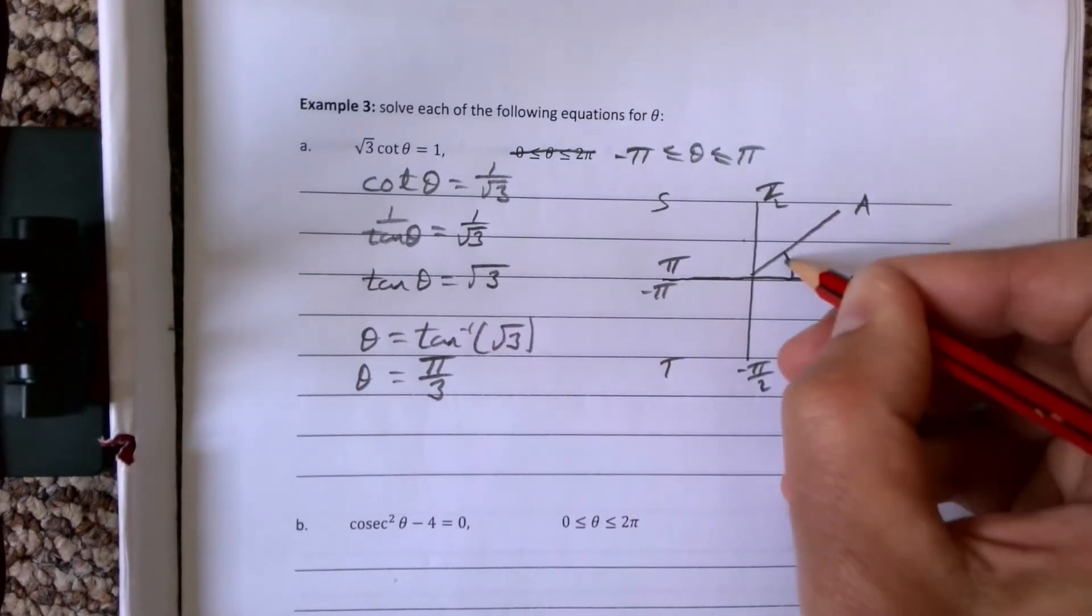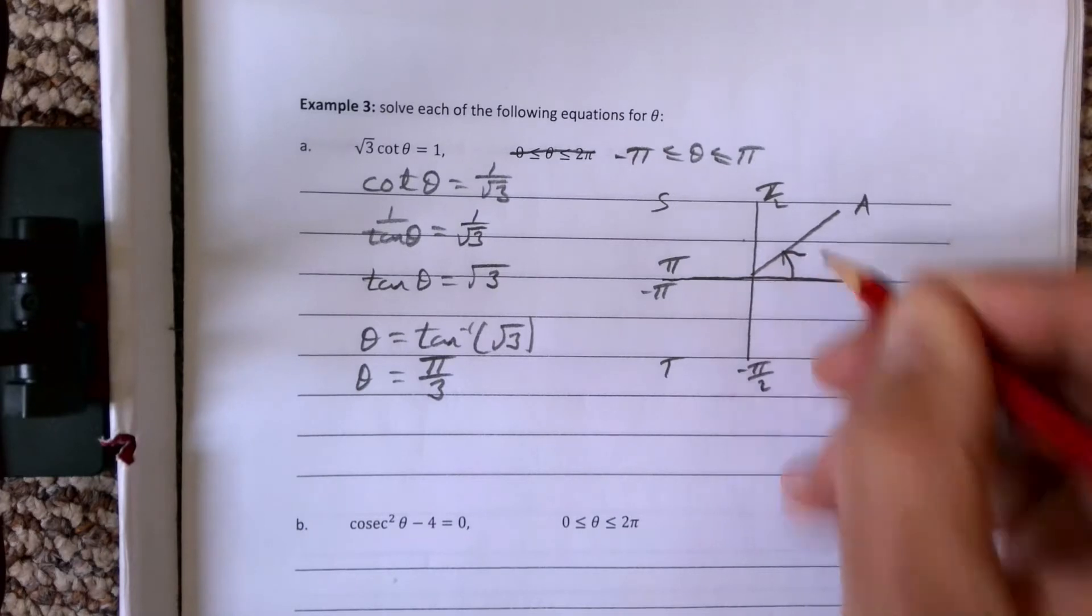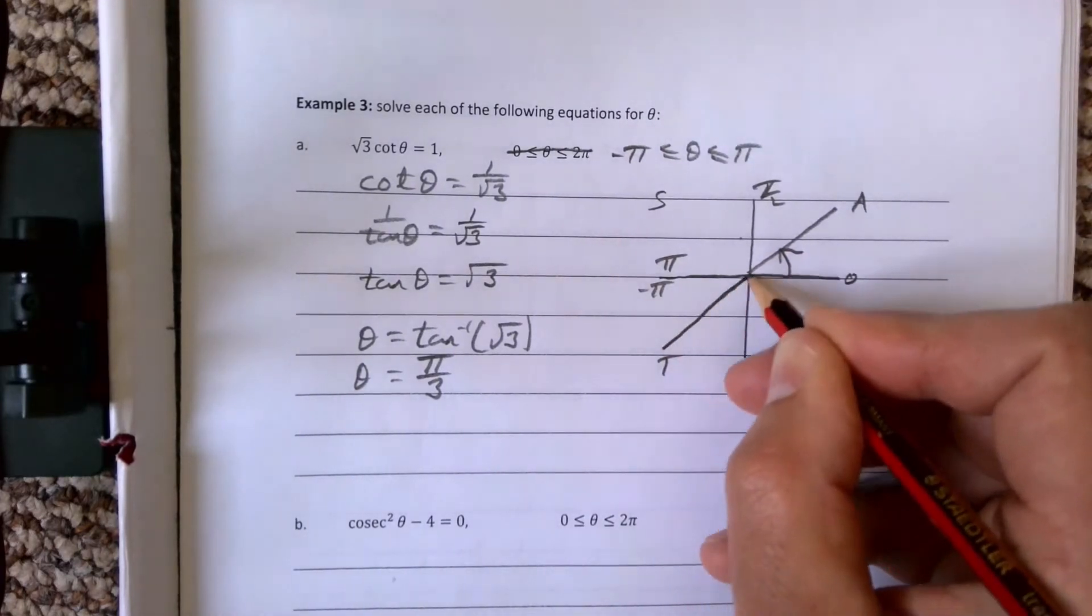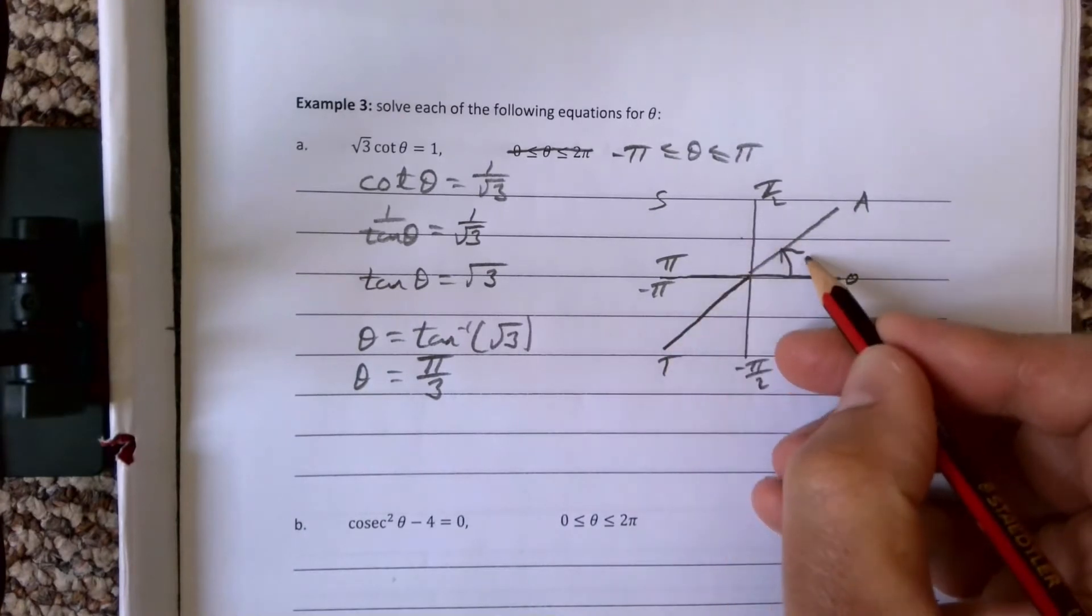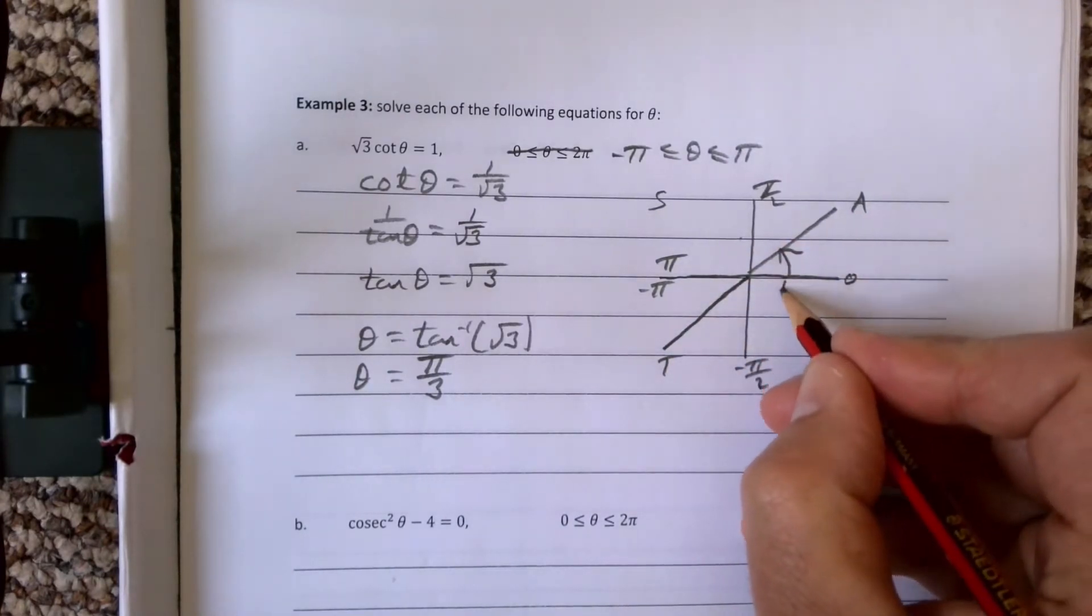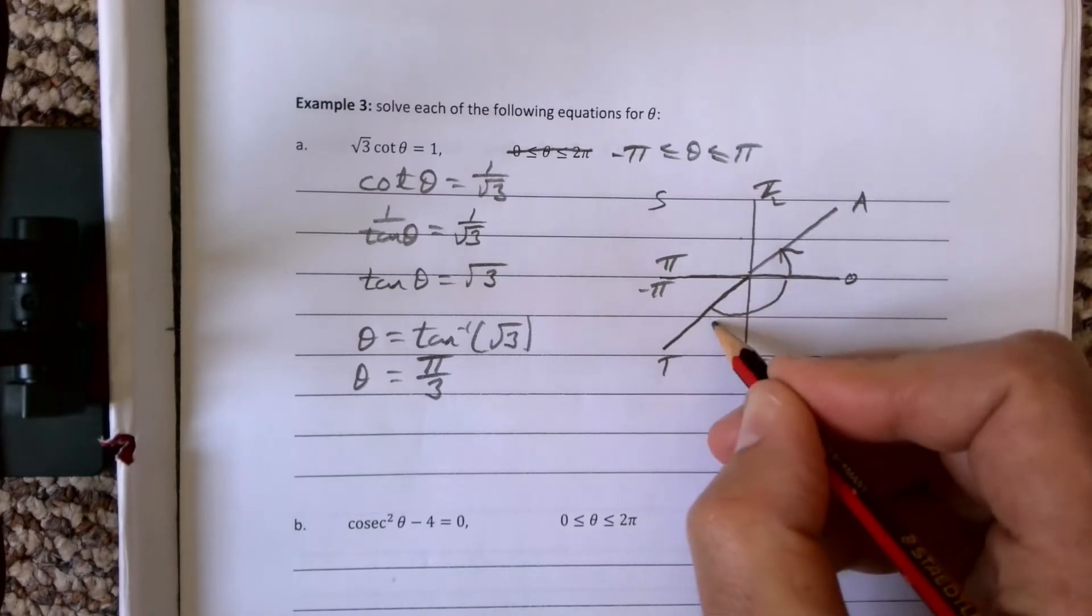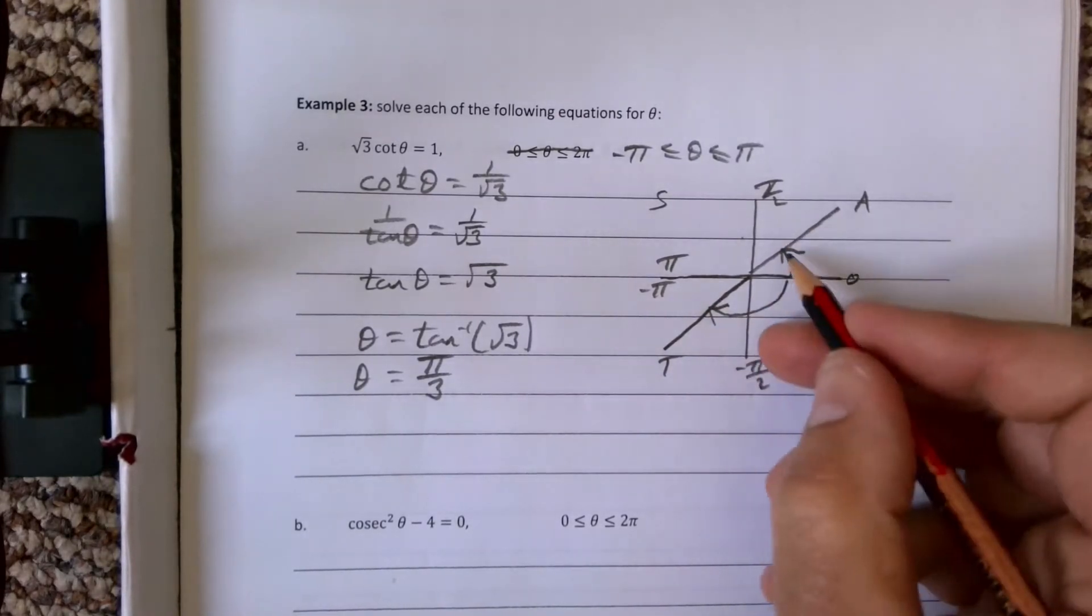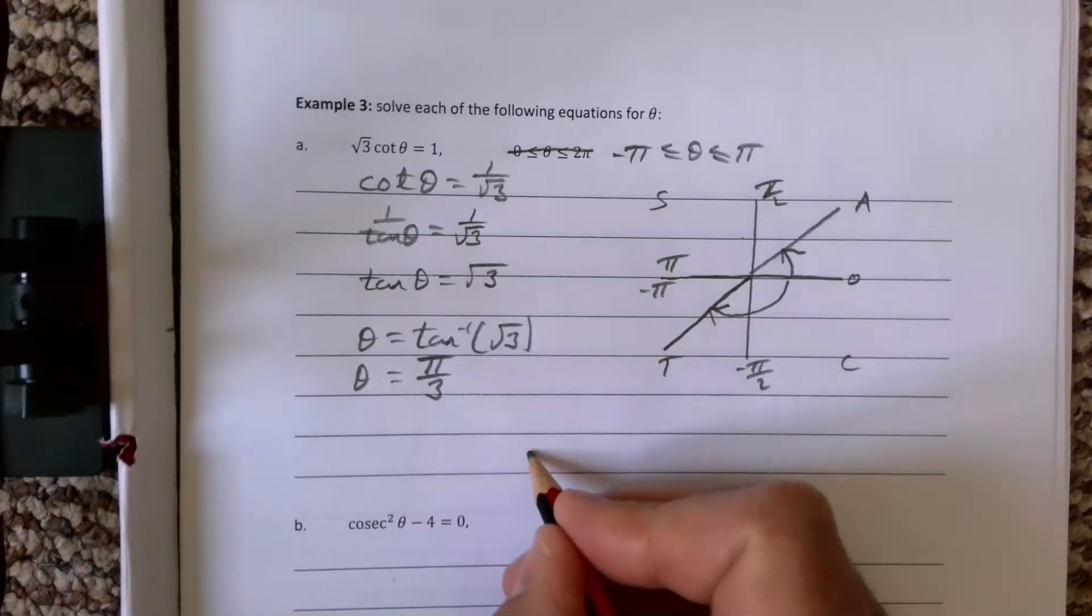We want to know where tan is positive, because √3 is a positive number, so tan is going to be positive here. We're looking for that angle there, and we're also looking for this angle here. Since it's between minus π and π, we have that.